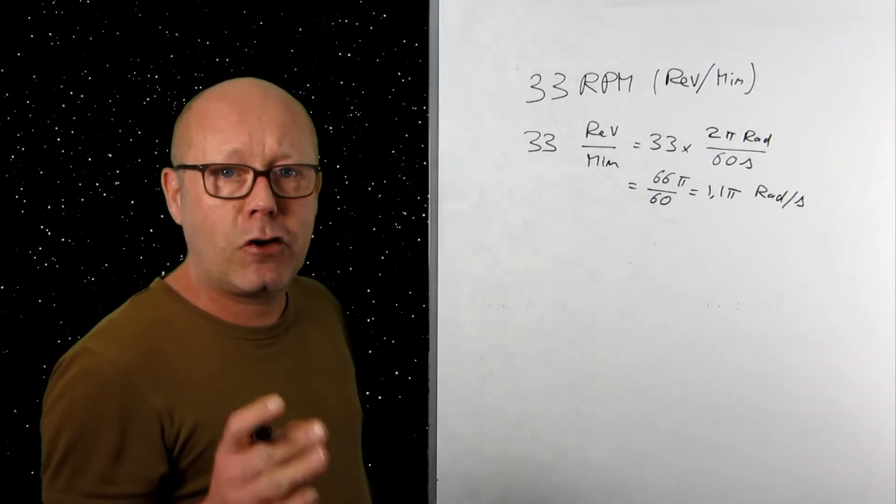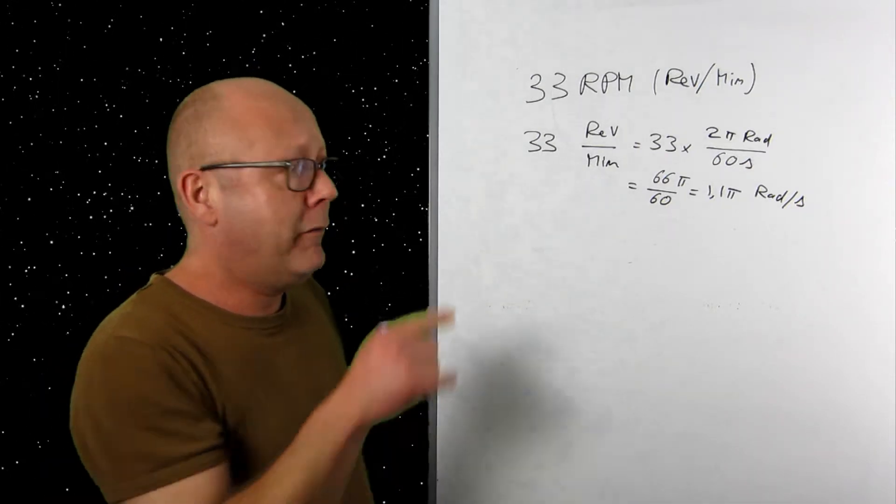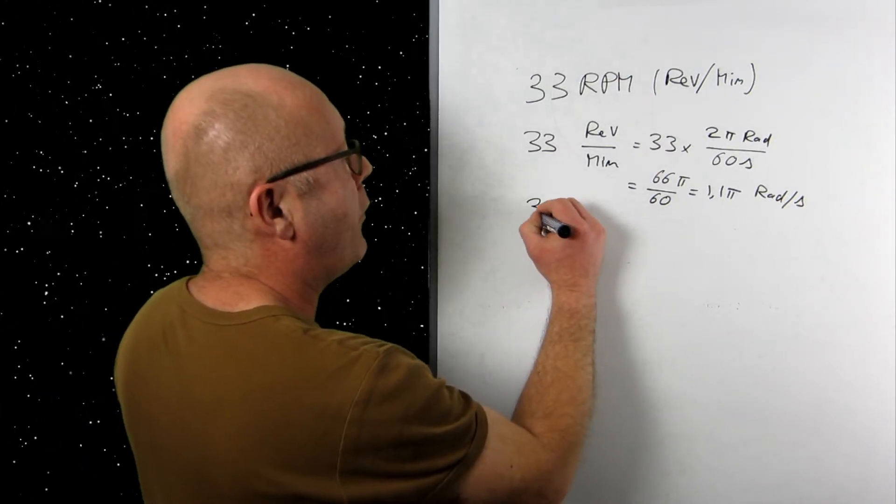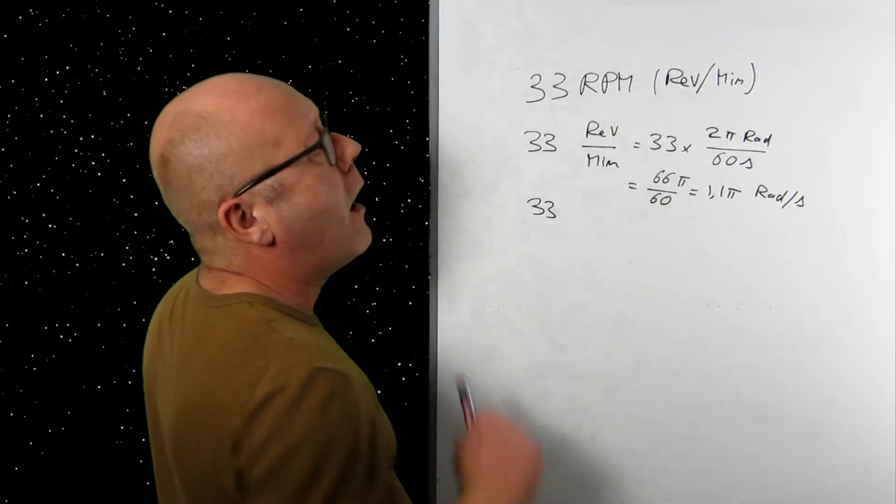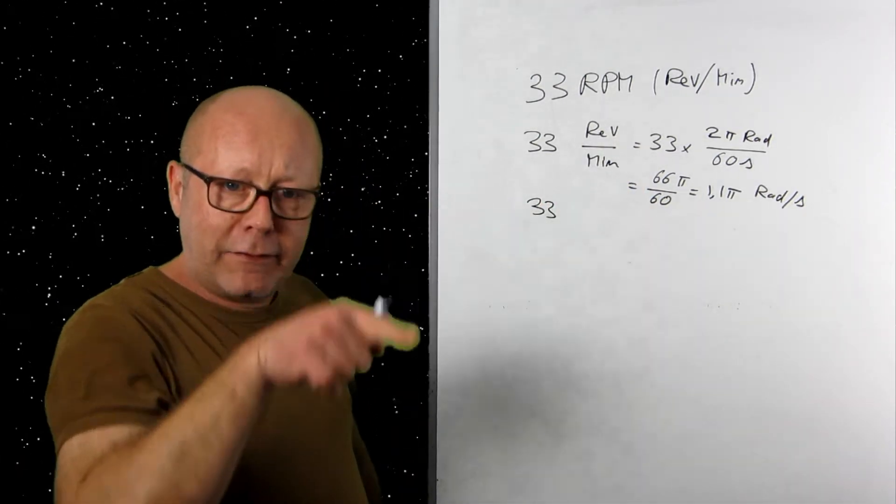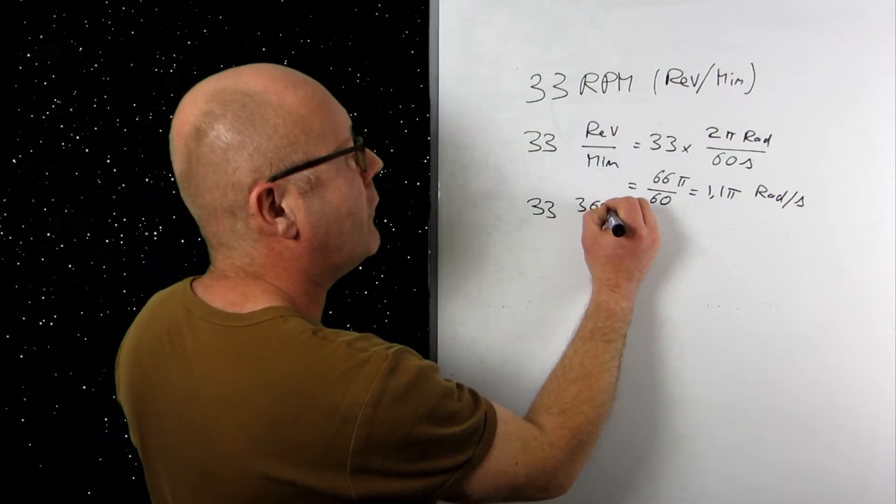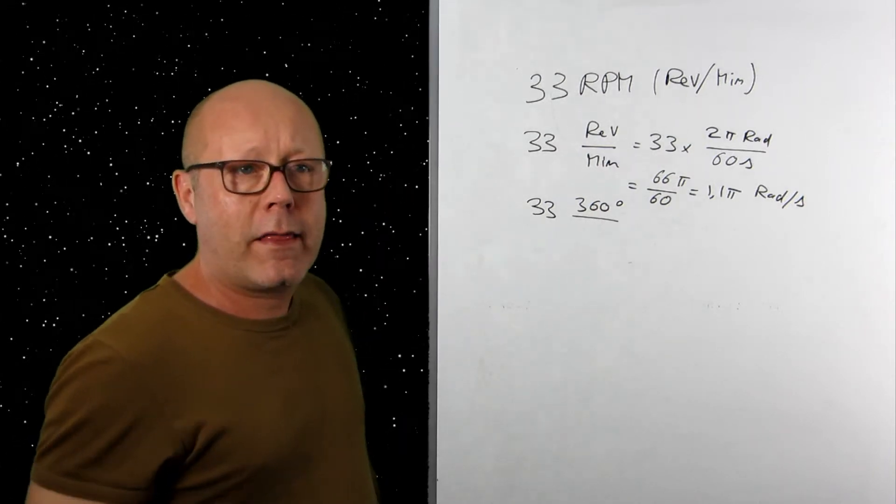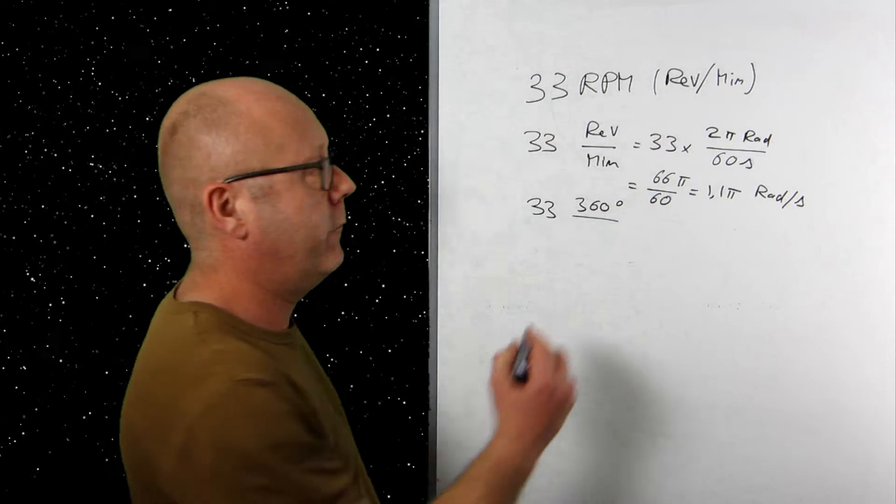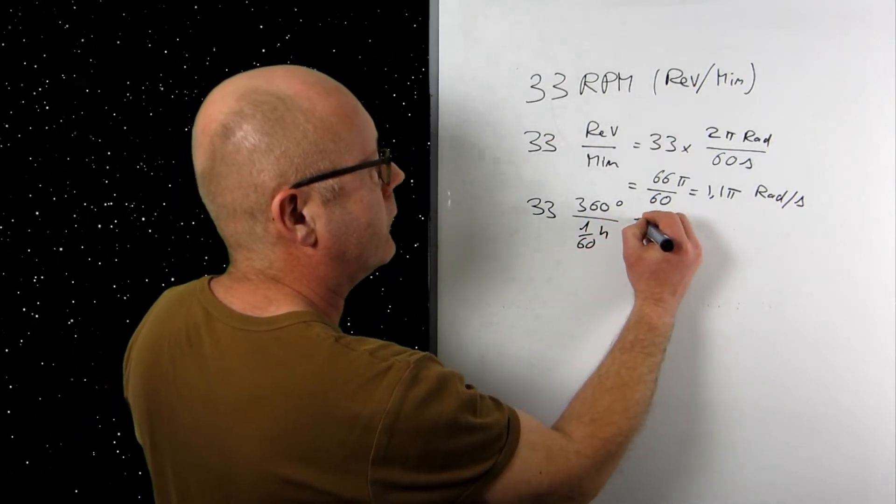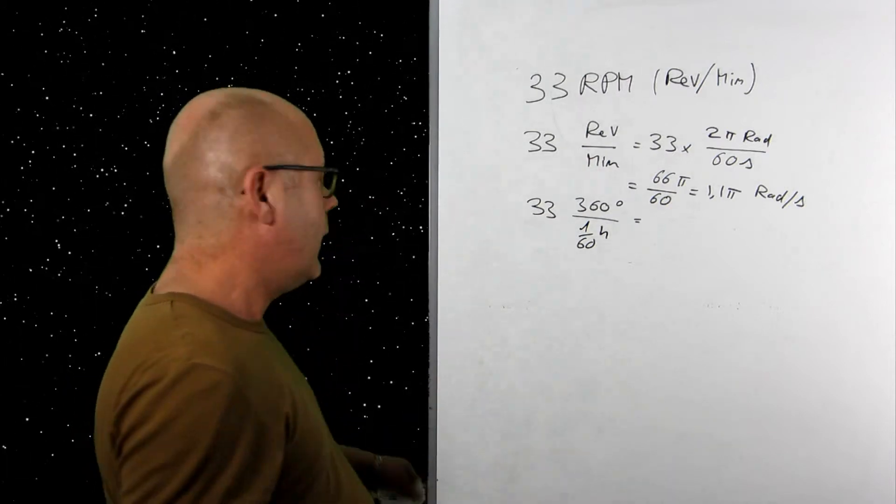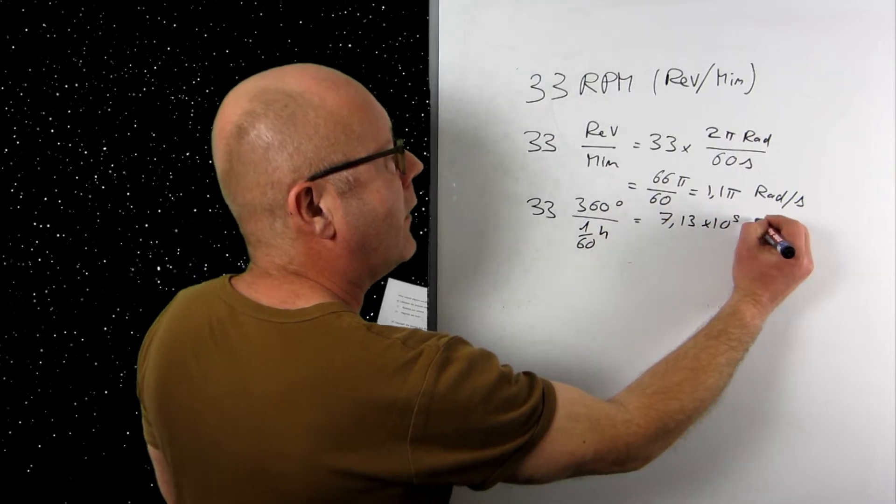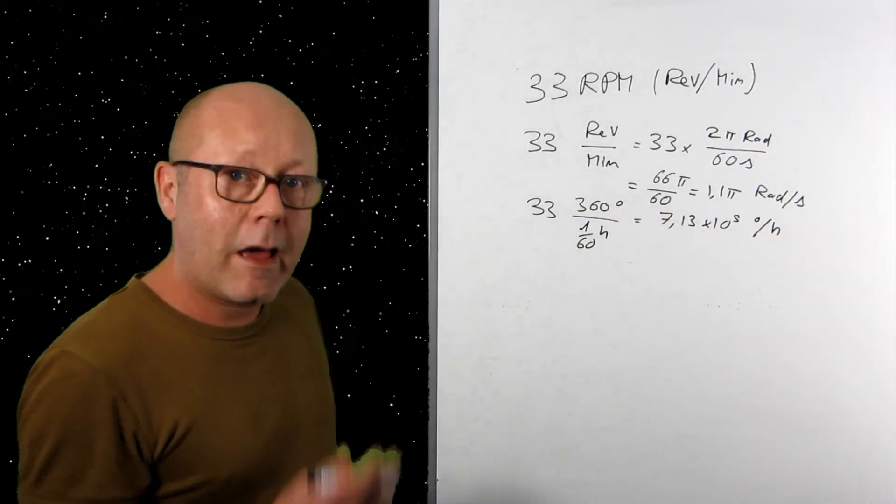Now, let's do the same exercise with degrees per hour. Pause the video if you didn't manage the first time and try to do it again with the degrees per hour. So, 33 revolutions per minute. How many degrees in one revolution? That's a full cycle, so 360 degrees. How many hours in one minute? Well, there are 60 minutes in one hour, so it's 1/60th. So you just plug this in your calculator and you find 7.30 by 10 to the 5 degrees per hour. That was the first question.